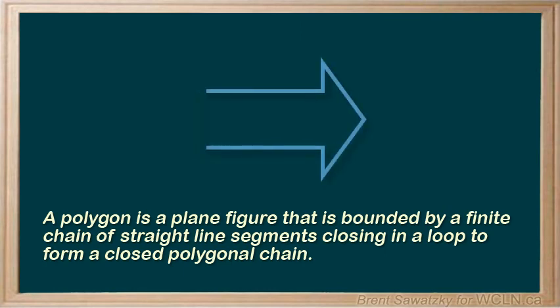One last one. Is this a polygon? Well, it's another arrow, and it looks much like the previous example, and it's made up of lines, but it's missing a border over here. Therefore, it's not a closed loop. It doesn't fit the criteria. This one is not a polygon.